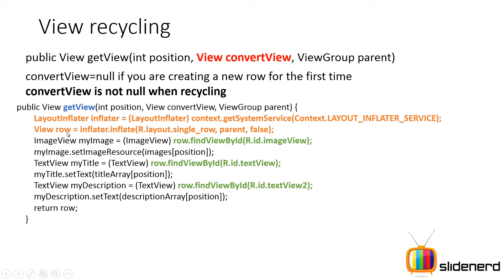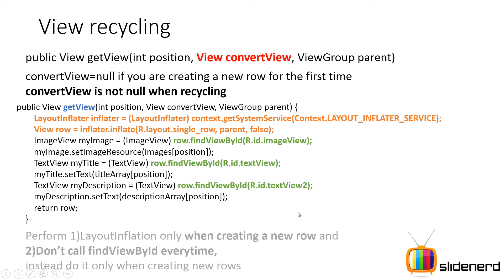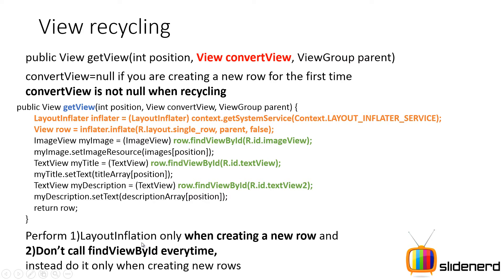I was inflating that and it was giving me this row object. I was using this row object to find the image view, set the image on that, find the text view and set the title, find text view number two and set the description. And then I returned this row back to the list view. So what is the problem with this code? The getView method gets called a lot of times. Layout inflation is a very expensive operation, so do it only when you are creating a new row. Otherwise while recycling, try to find a way to avoid doing layout inflation.